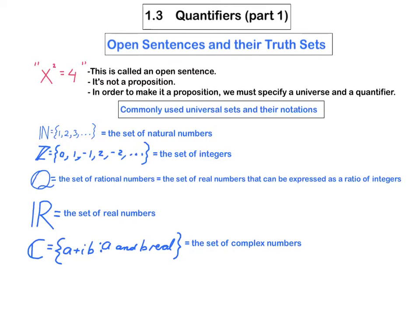For the set of complex numbers I've used what's called set builder notation. So you can see I've got two curly brackets, some kind of a symbol here, a colon, and then some kind of a statement. The way you read this, you read it as the set of all A plus iB such that A and B are real. So that's essentially telling you what a typical element of the set of complex numbers looks like. A typical complex number can be written in the form A plus iB where A and B are real numbers.